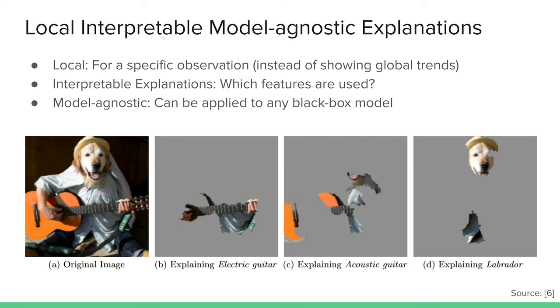The next method is called LIME. Instead of just visualizing the weights of an individual input, we can use perturbation-based methods — where we actually start messing around with our input and watch what happens in the model. LIME stands for Local Interpretable Model-Agnostic Explanations: local means it applies to a specific observation rather than global trends; interpretable means it explains which features were used; and model-agnostic means it can be applied to basically any black box model, not just deep convolutional networks.